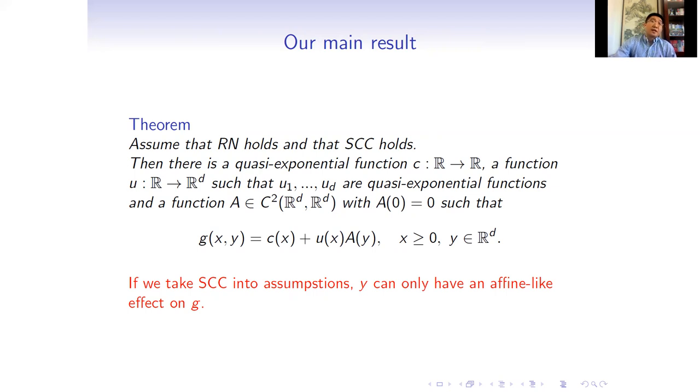Recall that we didn't make direct structural assumptions on g and that the parameters y might appear anywhere if g is seen as a function of x. Our main result, however, shows that if we take SCC into our assumptions, y can only have an affine-like effect on g. Under this structure, it is known that g as a function of x has a very specific form. This reduces the class of possible parametrized curves tremendously.